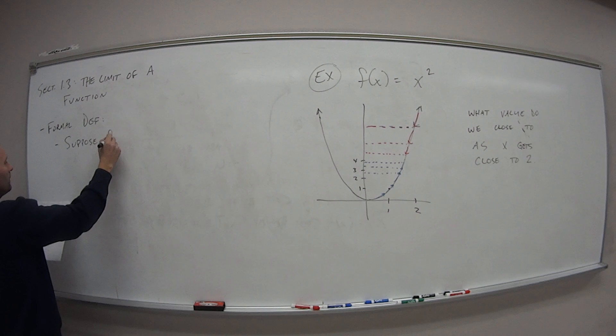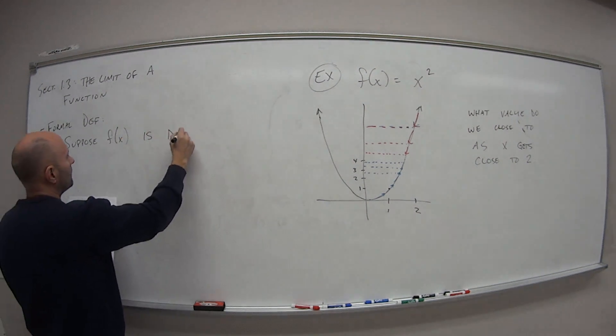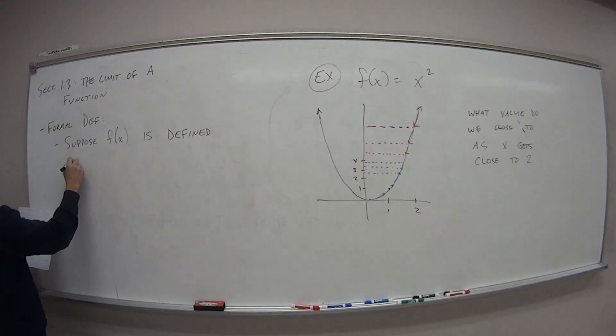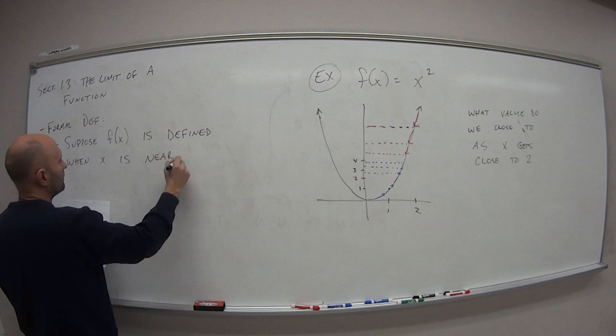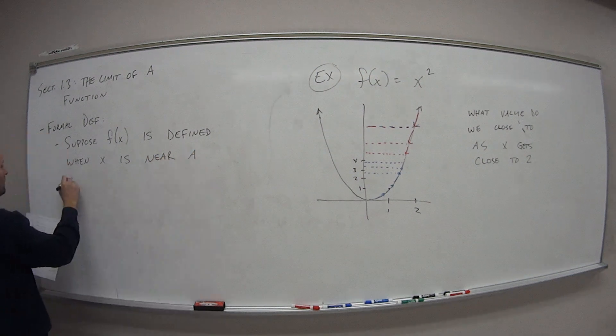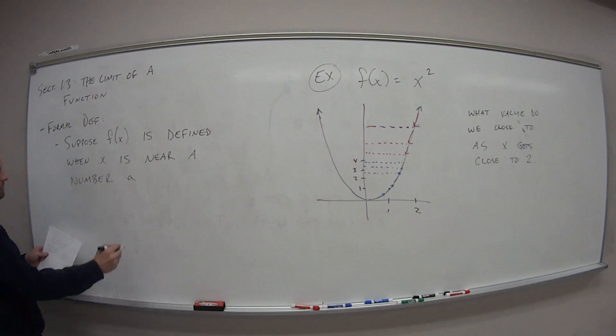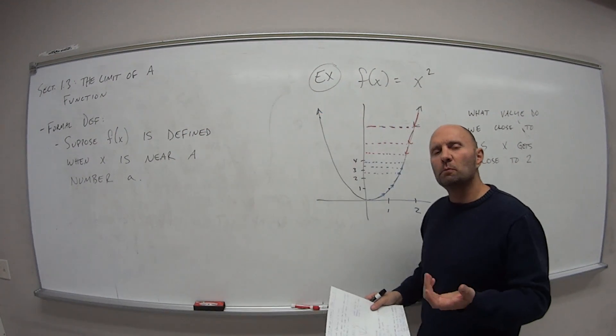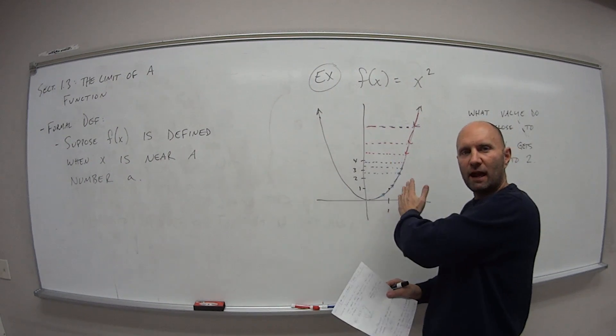Suppose f of x is defined when x is near a number, we're going to call it a. So first off, what does this mean when it's defined near a number a? Well, think about the square root function. The square root function is on the right half of the graph.